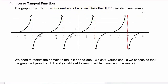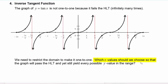So as we've done with sine and cosine, we need to restrict the domain to make it one-to-one. As we look at the graph, we ask ourselves which x values should we choose so that the graph will pass the horizontal line test and yet still yield every possible y value in the range.